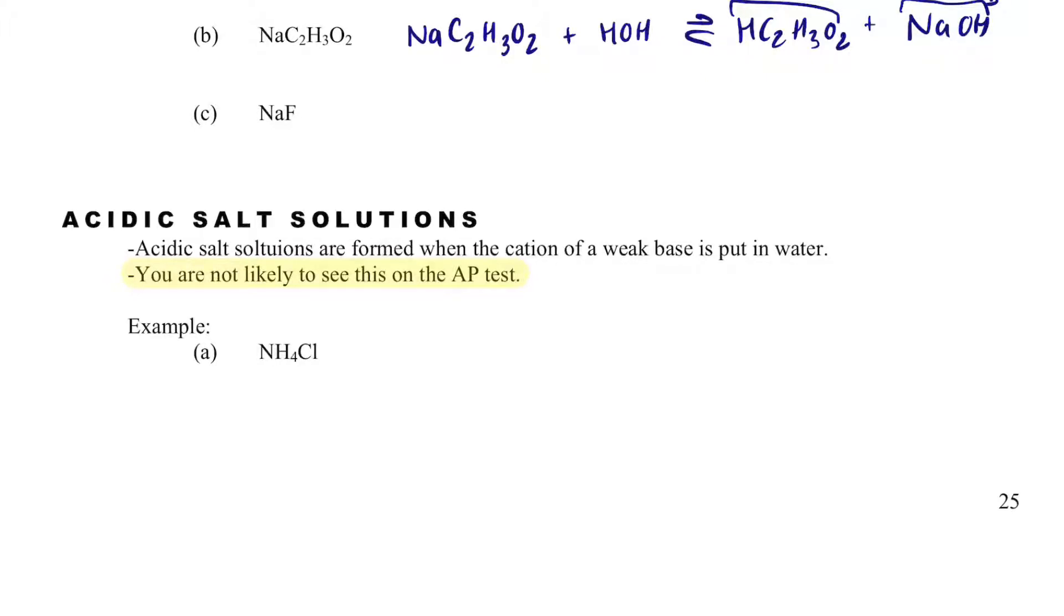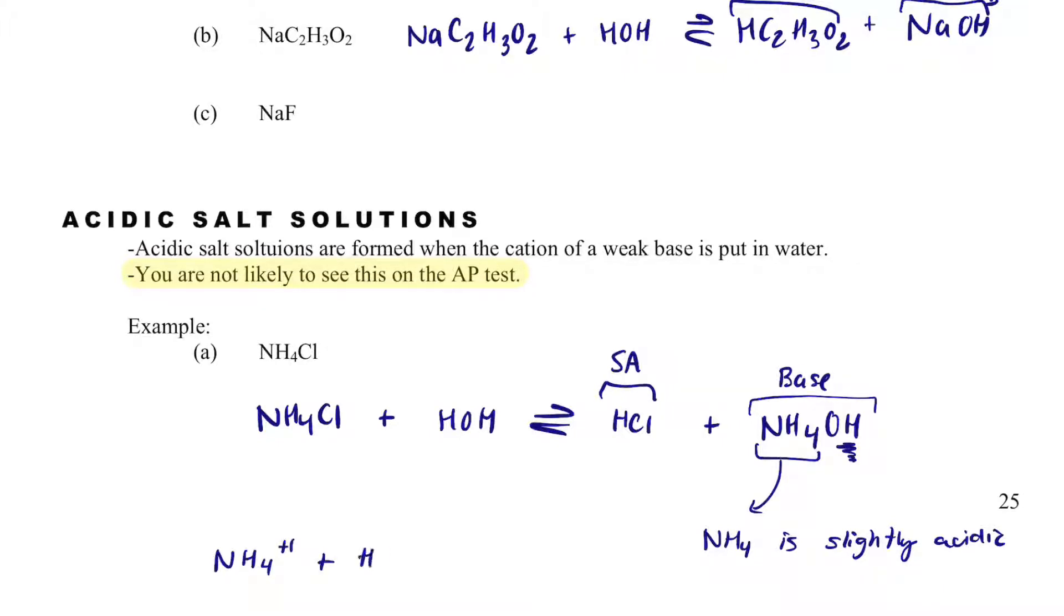and that would be like ammonium chloride. So what we could do is we could write NH4Cl plus HOH, and in this reaction, I'm going to get HCl plus ammonium hydroxide, and ammonium hydroxide is a base. HCl, we know that that's a strong acid, and this hydroxide is strong, but we have ammonium. Ammonium is slightly acidic,